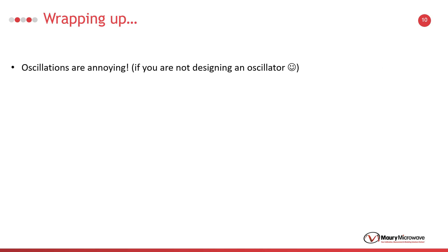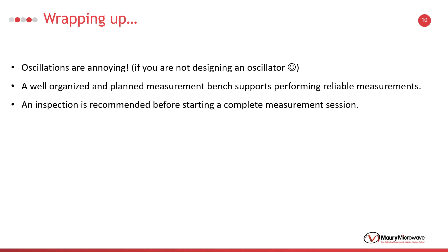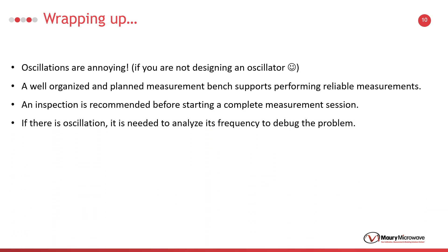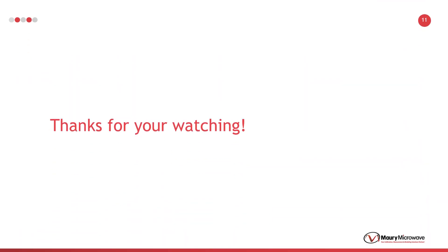Let's wrap it up and finish the presentation. Oscillations during device characterization measurements are annoying and we hate them. If your device isn't desperately unstable, some small tricks can save your day. First, it's essential to have a tidy, organized, and planned measurement setup. Second, a short inspection with your DUT before the actual large signal measurements can save lots of time and prevent equipment damage. Third, if there is an oscillation, it's important to understand its frequency to debug the problem. And fourth, use overcurrent and overvoltage protections of your power supplies properly. Set the stop conditions of your measurements, such as maximum current, compression, and maximum power. Thanks for your attention. I wish you oscillation-free measurements.